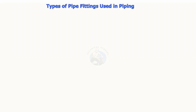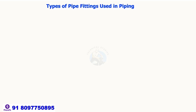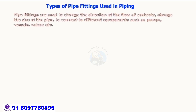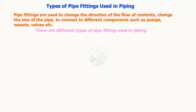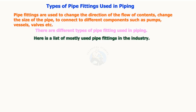Types of pipe fittings used in piping. Pipe fittings are used to change the direction of the flow of contents, change the size of the pipe, and to connect to different components such as pumps, vessels, valves, etc. There are different types of fittings used in piping. Here is a list of mostly used pipe fittings in the industry.